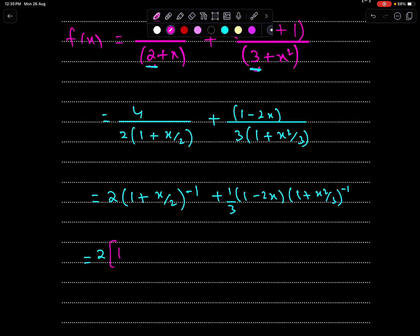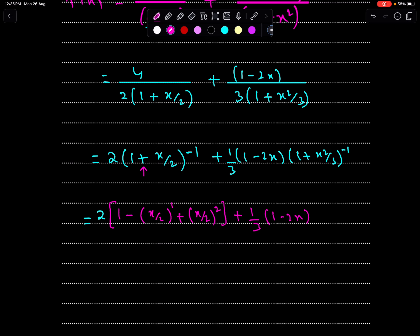Since this is plus sign, so we have to expand this expansion with alternate signs. So, plus 1 minus second term to the power 1, then second term to the power 2, that's it. So, 1 plus 1 upon 3, 1 minus 2x, and let's expand this expansion.